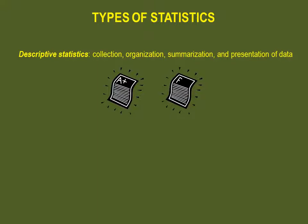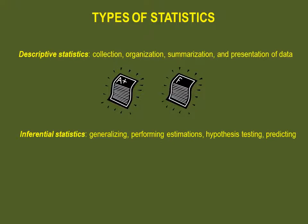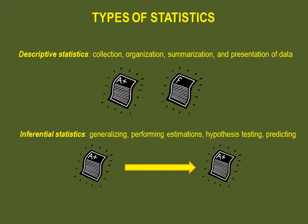The second type is inferential statistics, which consists of generalizing, performing estimations and hypothesis tests, determining relationships among variables, and making predictions. One example would be predicting grades based on your transcripts. If all of your grades from ESG courses have an average of 90%, it is very probable that you will obtain a grade of approximately 90% on any other ESG courses that you take.